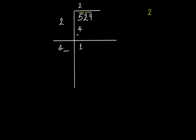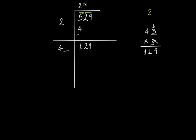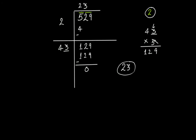2 times 2 is 4 — put a blank space here and bring down 29. Now write 4 and the blank space, and think of a digit to put there so that the new number (something like 40-something) multiplied by that same digit gives a result equal to 129. That digit is 3 — 43 times 3 is 129. Write 3 here and 3 here, and you get 129. Subtract it and you get 0 as remainder. Therefore 23 is the square root of 529, and we have two digits as estimated from the number of bars.